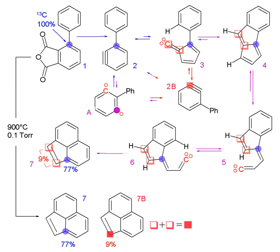Mass spectrometry detects the difference in an isotope's mass, while infrared spectroscopy detects the difference in the isotope's vibrational modes. Nuclear magnetic resonance detects atoms with different gyromagnetic ratios. Radioactive decay can be detected through an ionization chamber or autoradiographs of gels.